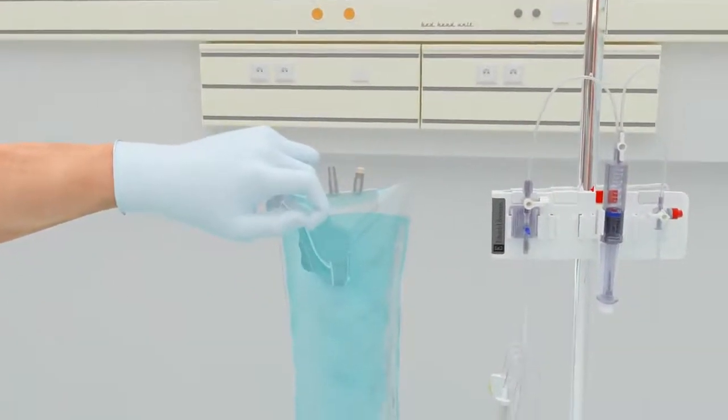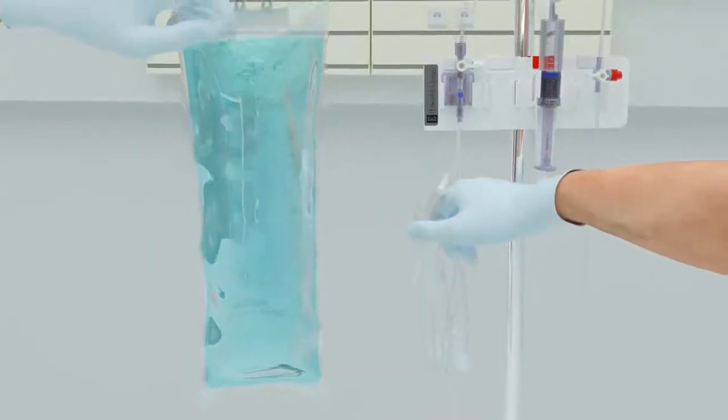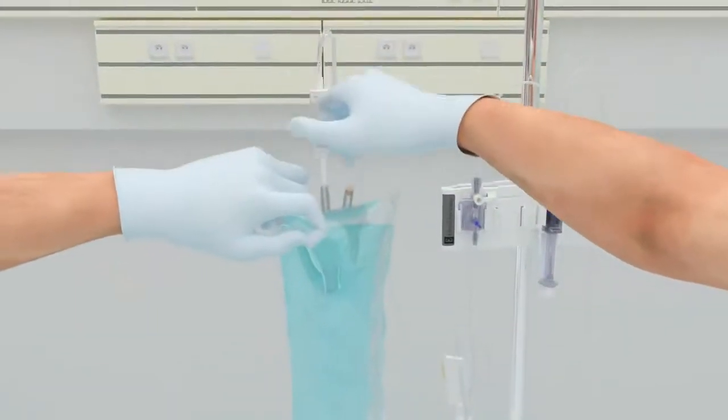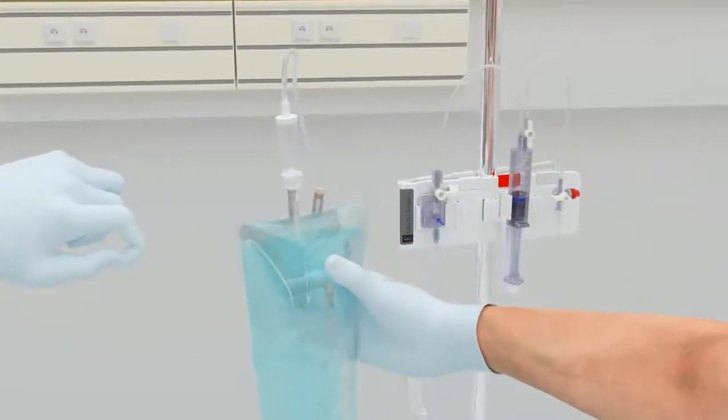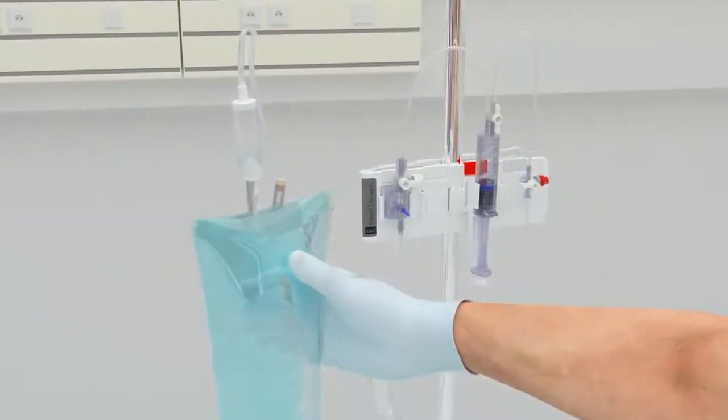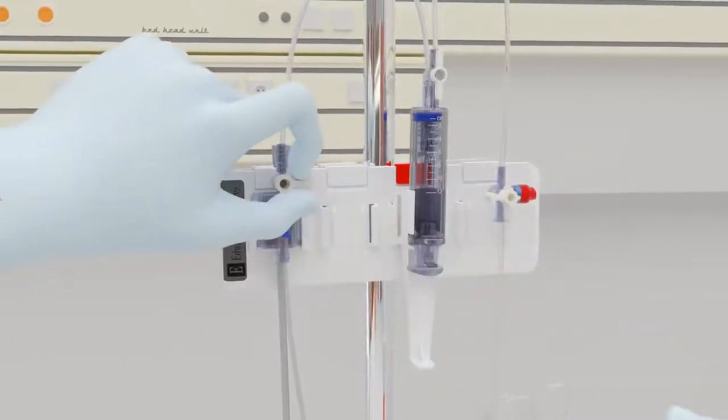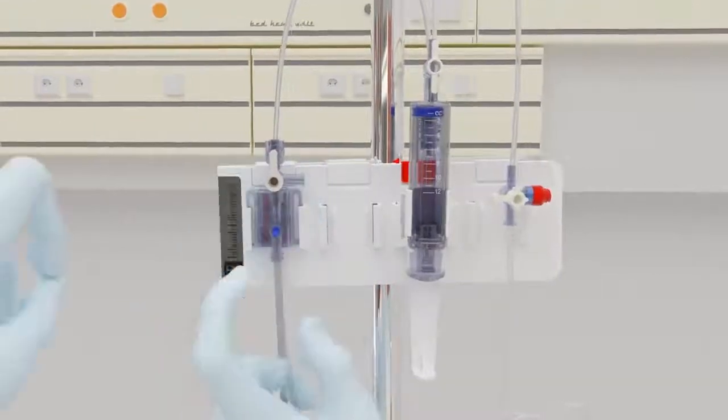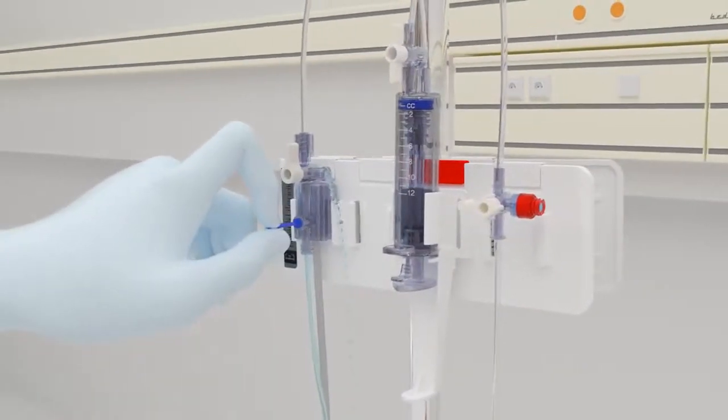Without pressurizing the fluid, begin to gravity fill the kit first through the transducer and out through the vent port according to its manufacturer's instructions.